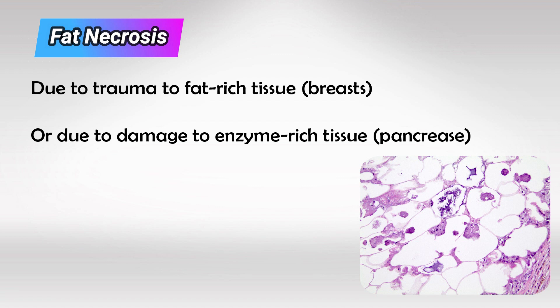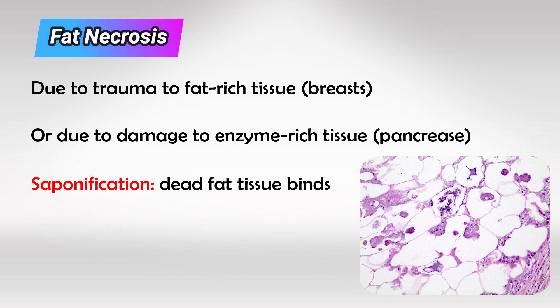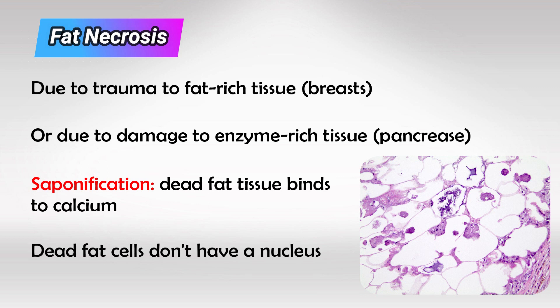In any case, dead fat tissue will release lipase, and these lipases will continue to degrade more and more fat cells as they release more lipase. All this free fat will bind to calcium in a process known as saponification. So if we take a sample, we will see some dead fat tissue, evident by fat cells that don't have a nuclei in the periphery. We'll see some saponification, which is basically calcium, and that appears dark blue in H&E stains.